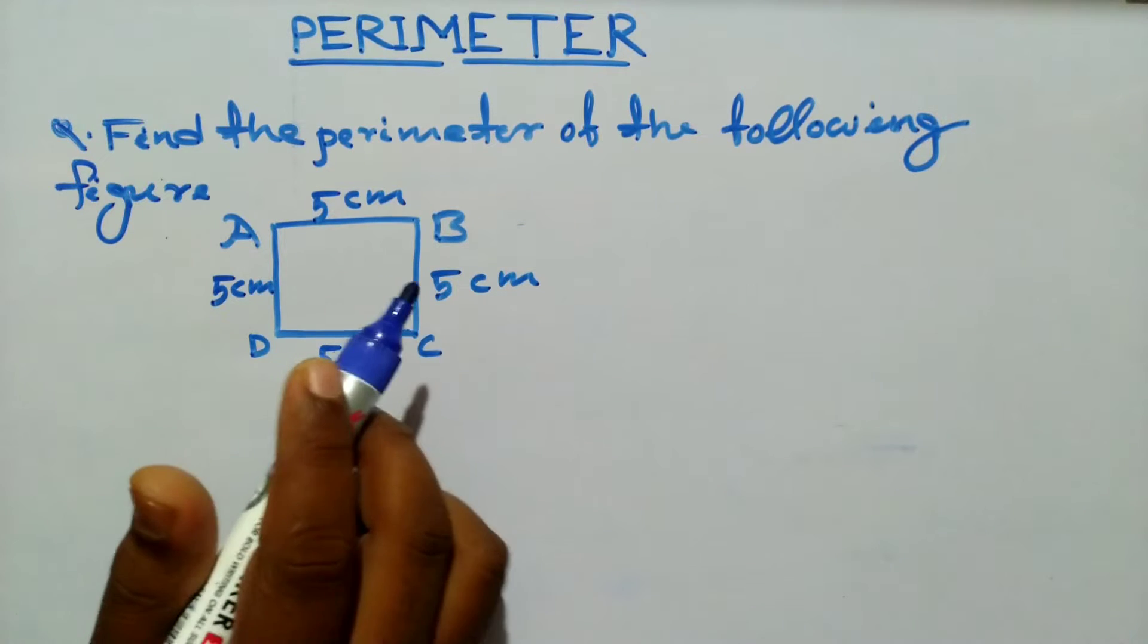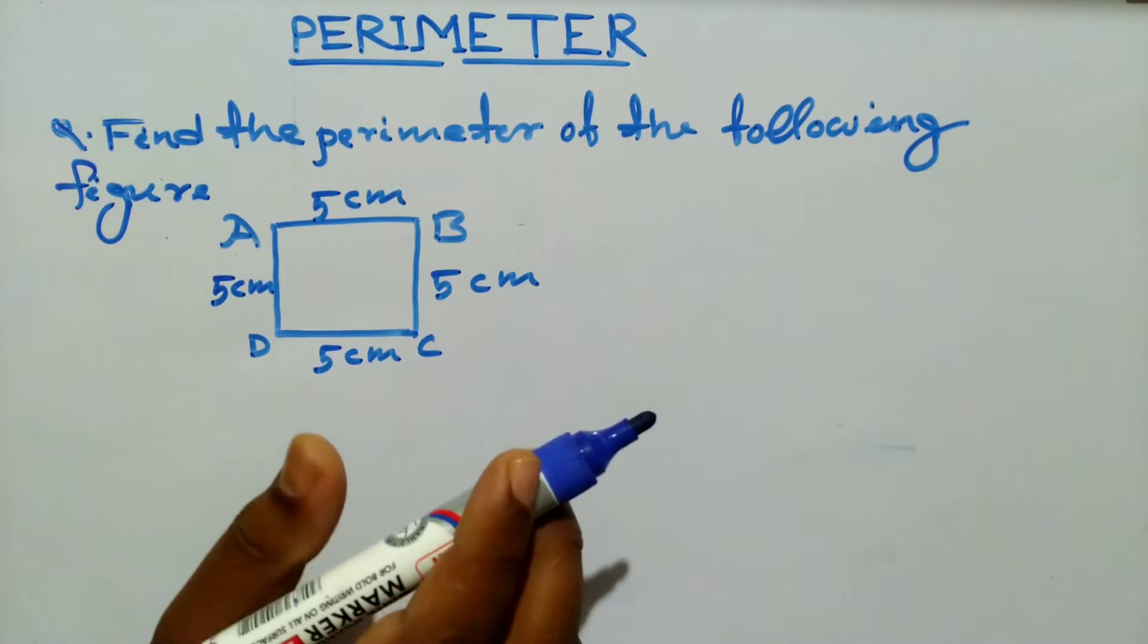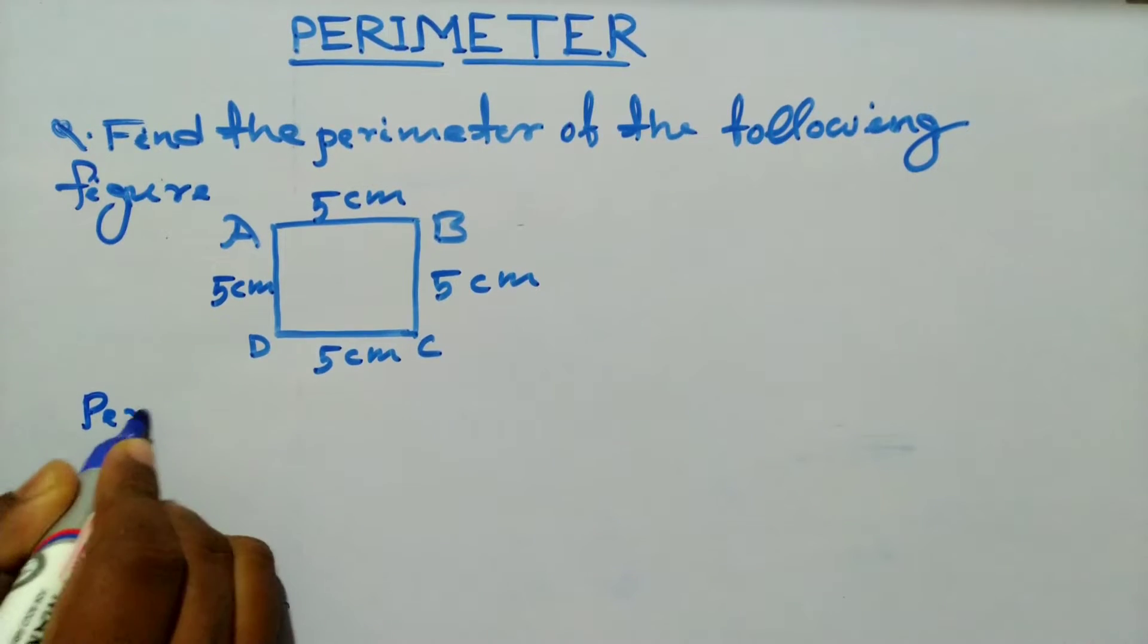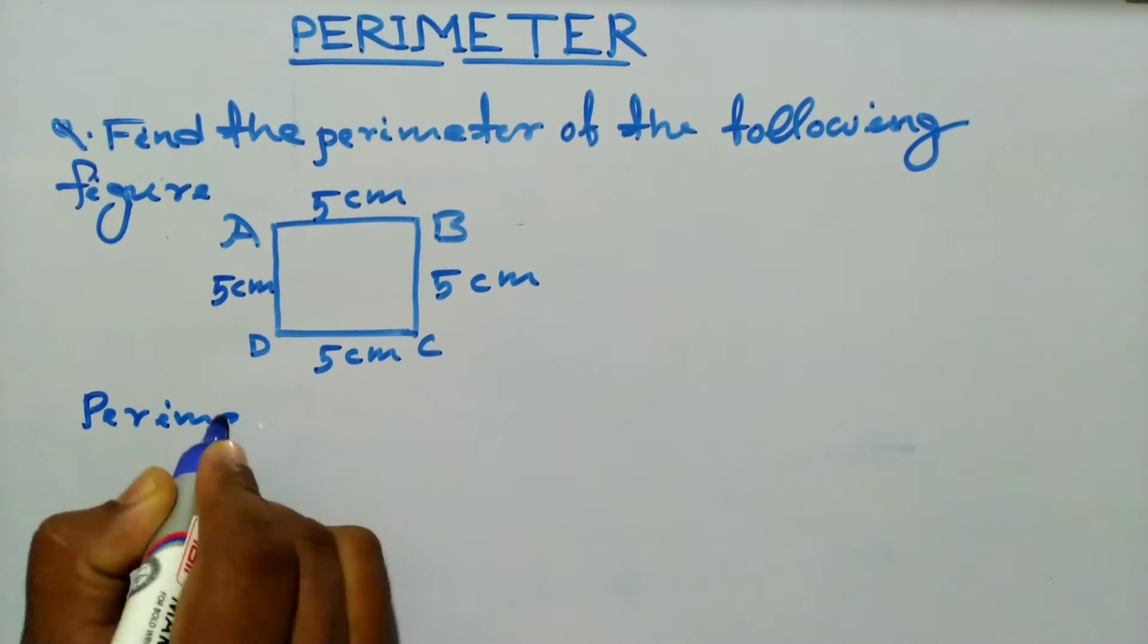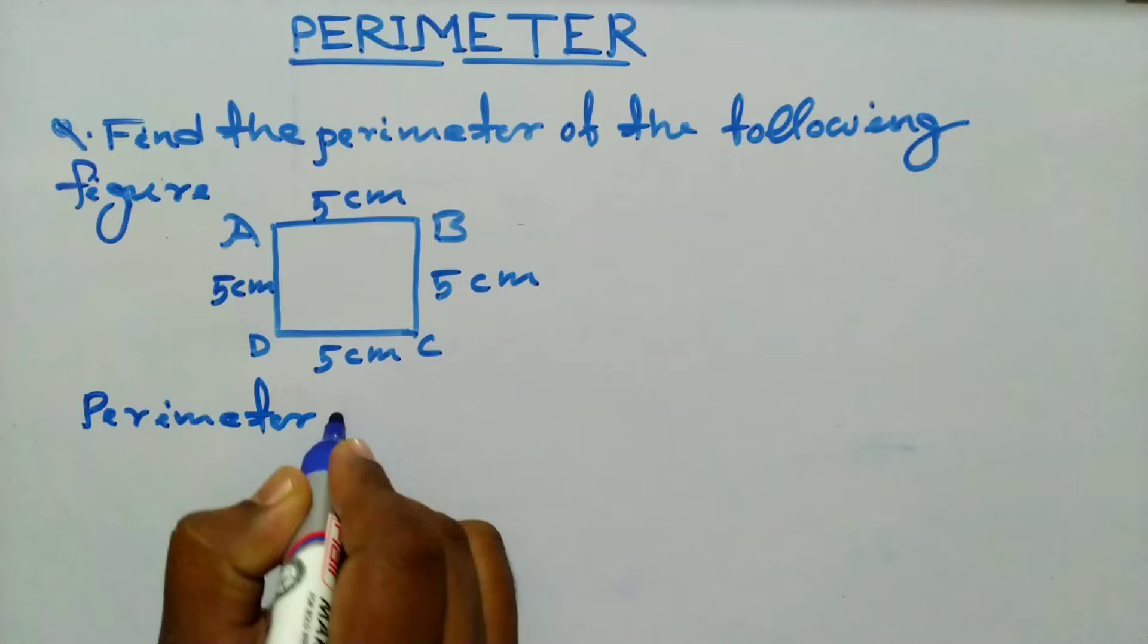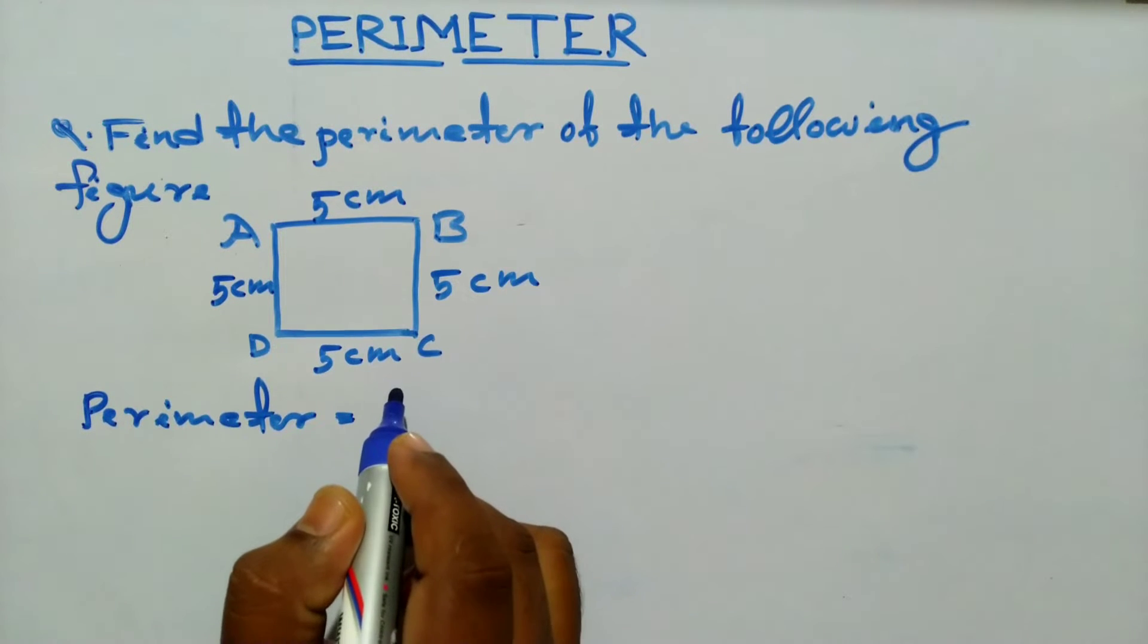Question: Find the perimeter of the following figure. Perimeter is equal to the sum of the total length.